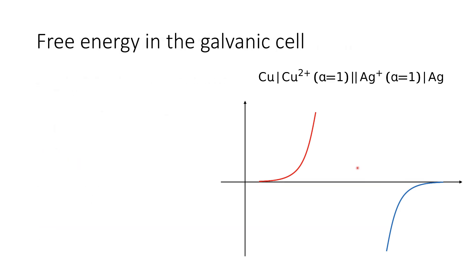When we consider the galvanic cell delivering energy, we think of it delivering a current. But its ability to deliver a current — the amount of current it delivers — fundamentally affects the cell potential because of the need to drive this overpotential.